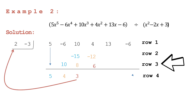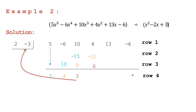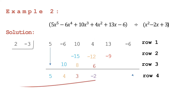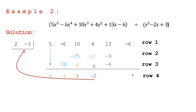Multiply again: 3 times 2 is equal to 6; write 6 in row three, fourth column. 3 times negative 3 is equal to negative 9. Then add the fourth column: 4 plus negative 12 is equal to negative 8, and negative 8 plus 6 is equal to negative 2. Then multiply and add again: negative 2 times positive 2 is equal to negative 4; write negative 4 in row three, fifth column. Negative 2 times negative 3 is equal to positive 6; write positive 6 in row two, last column.